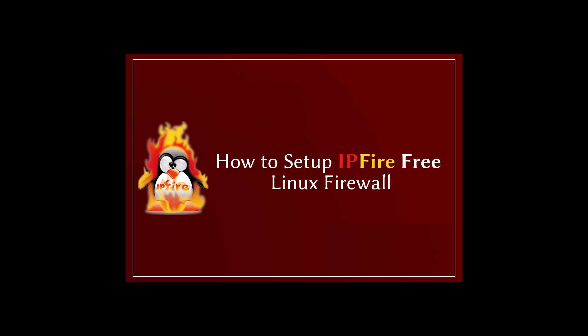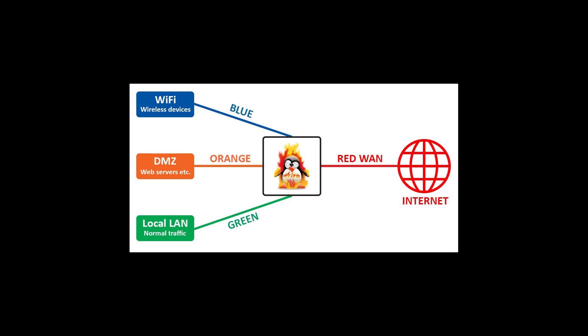Before we talk about issues, we need to understand the interfaces. They have names like red, green, blue, and orange — four network interfaces. Red is for internet or WAN, blue is for Wi-Fi network interface cards, orange is for web servers, and green is the interface for local ethernet LAN. In this tutorial I will be using only red and green interfaces.